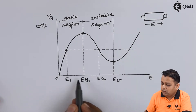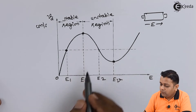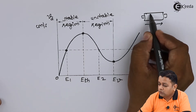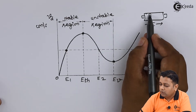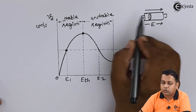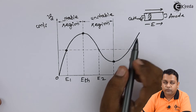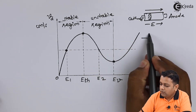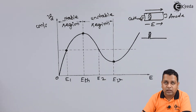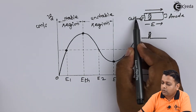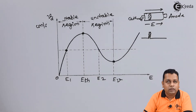Before the threshold field, the diode is stable — there is no instability. After crossing the threshold value, domain formation occurs in the diode, most likely near the cathode terminal, and this domain travels from the cathode end to the anode end. The current pulses drift from cathode to anode terminals, and once the domain reaches the anode, it is absorbed.